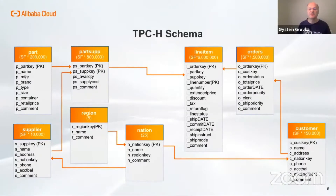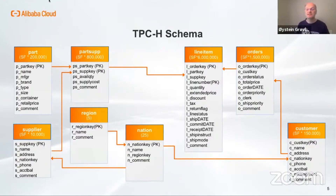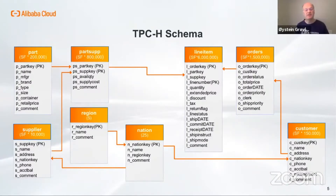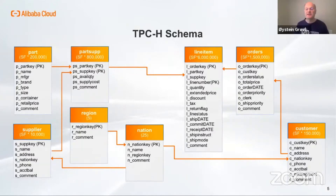Here's an overview of the TPC-H schema. It is a database for ordering parts. There are suppliers that supply parts and customers that may order multiple parts in each order. The scale factor determines the database size, and for scale factor one, there's one gigabyte of raw data.